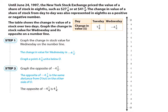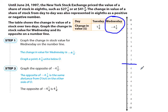What they want you to do is graph the change in the stock value for Wednesday and its opposite. Step one says to graph the change in the stock value for Wednesday on the number line. Wednesday's change was negative four and a quarter. So we want to graph this at negative four and a quarter — it's going to be somewhere between negative four and negative five. Since there are no indicators, I can make a pretty good guess. A quarter is somewhere between negative four and four and a half, so it's probably going to be somewhere in that area.